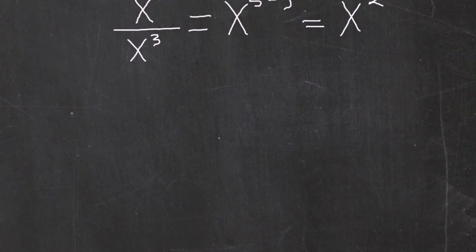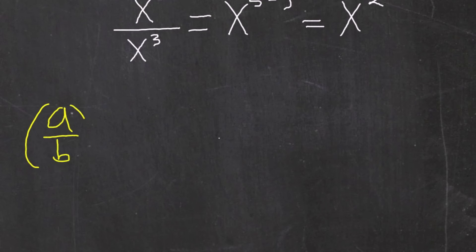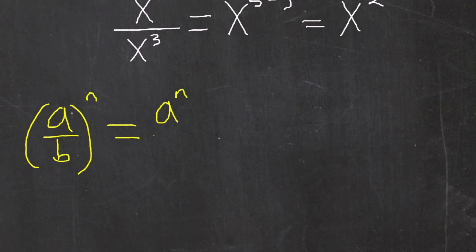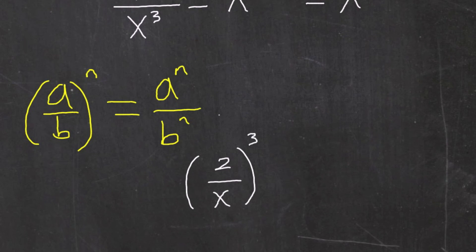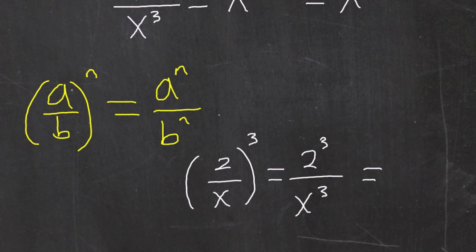Finally, the law of exponents tells us that if I have two different numbers written as a fraction, and that whole fraction is being raised to a certain exponent, we can rewrite this as the numerator raised to the exponent over the denominator raised to the same exponent. For example, let's say we had 2 over x raised to the third power. I can rewrite this as 2 raised to the third power over x raised to the third power. We know that 2 raised to the third power gives us a value of 8, and x raised to the third power would just remain as x raised to the third power.